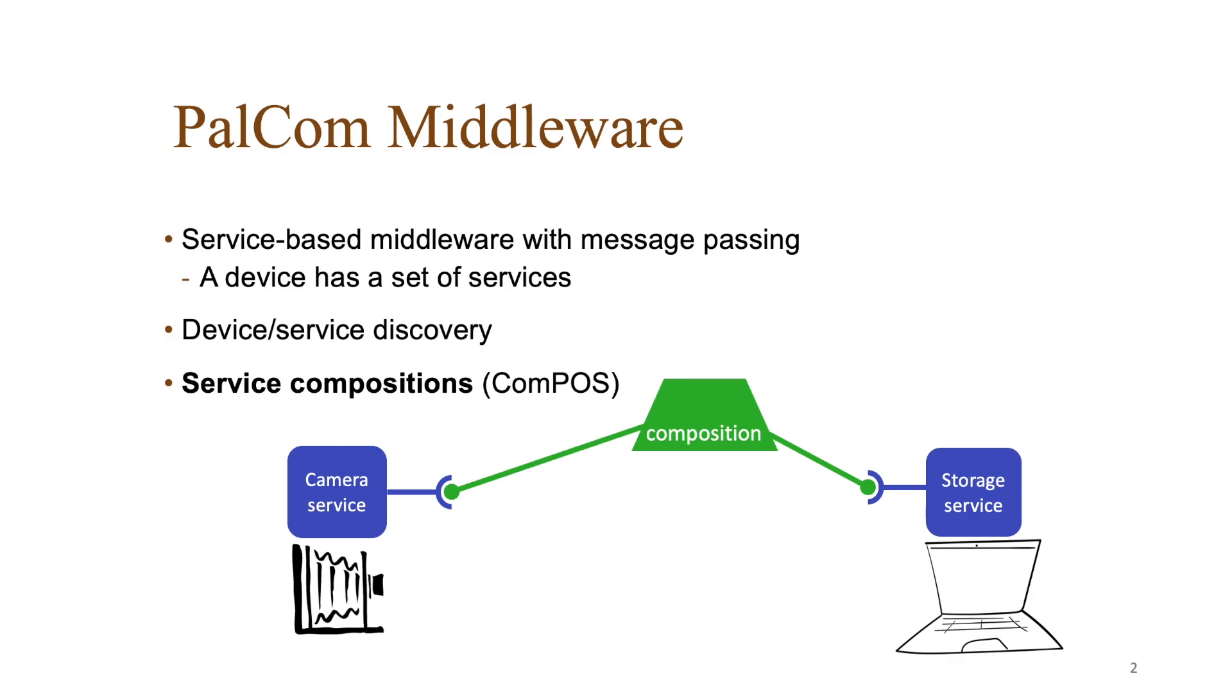A device can have multiple services. For example, a laptop could also have a computational service. The composition connects the camera service to the storage service so that when the camera takes a photo the image is stored on the laptop.